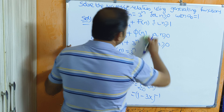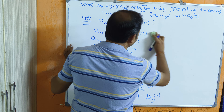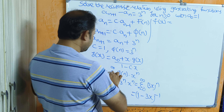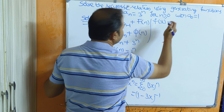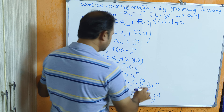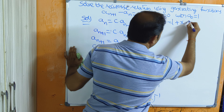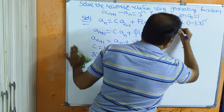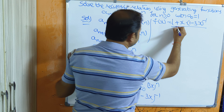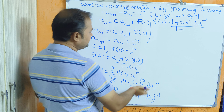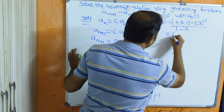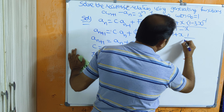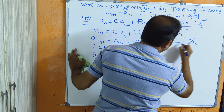Now we compute f(x). The formula gives f(x) equal to a(0) plus x times g(x), divided by 1 minus c times x. Substituting a(0) equal to 1, g(x) equal to (1-3x)^(-1), and c equal to 1, we get f(x) equal to 1 plus x times (1/(1-3x)), divided by (1-x). This simplifies to 1 plus x divided by (1-3x), all over (1-x).